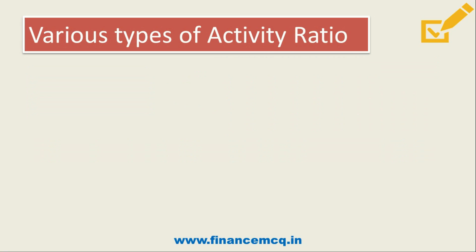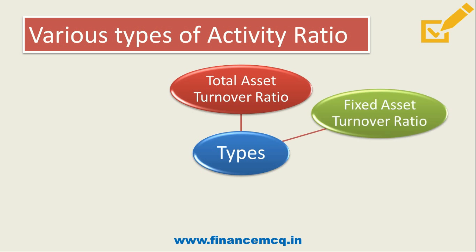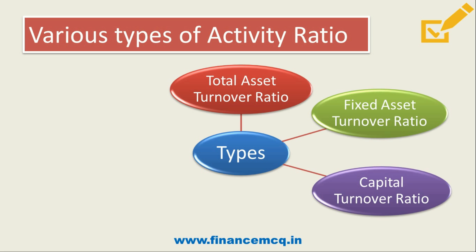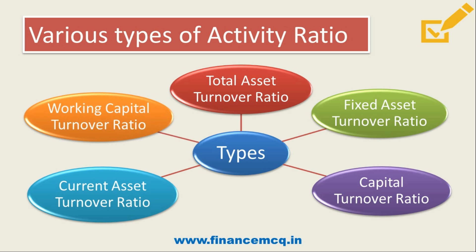There are various types of activity ratios: the first one is total asset turnover ratio, then fixed asset turnover ratio, then capital turnover ratio, then current asset turnover ratio, and lastly working capital turnover ratio. Let's discuss them one by one.